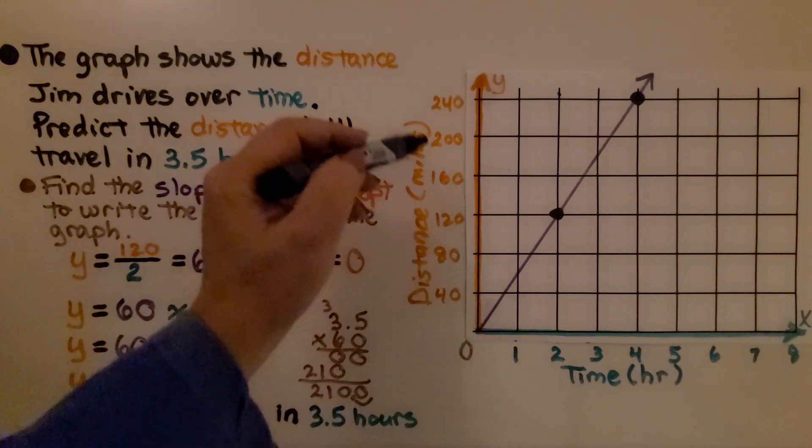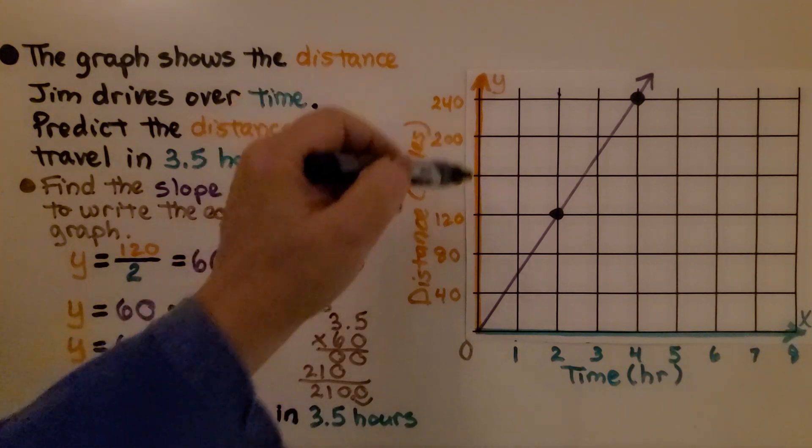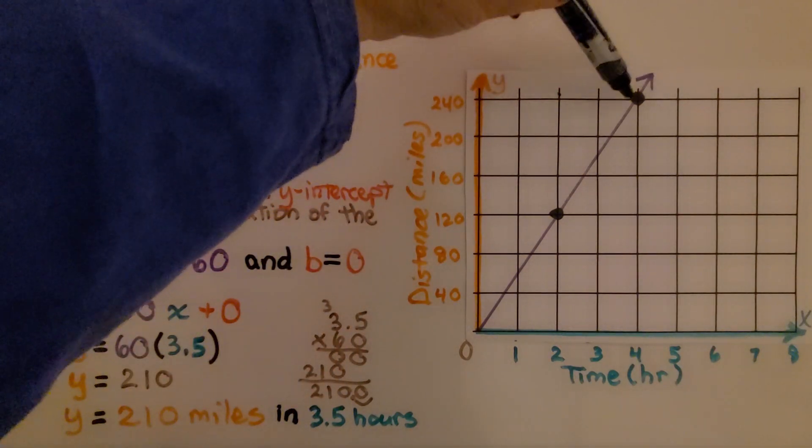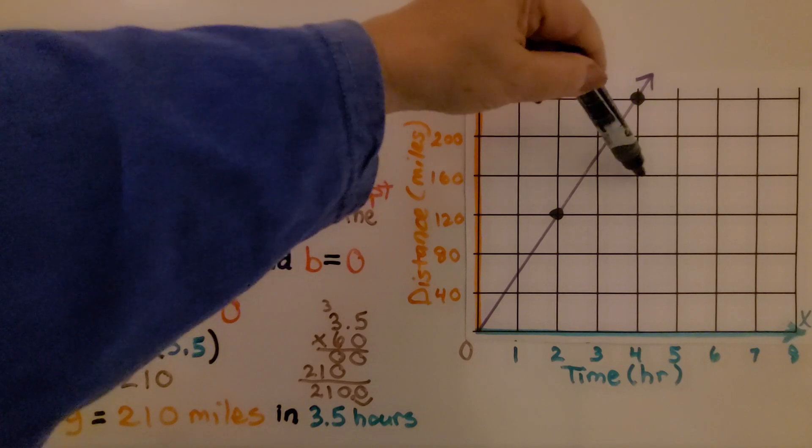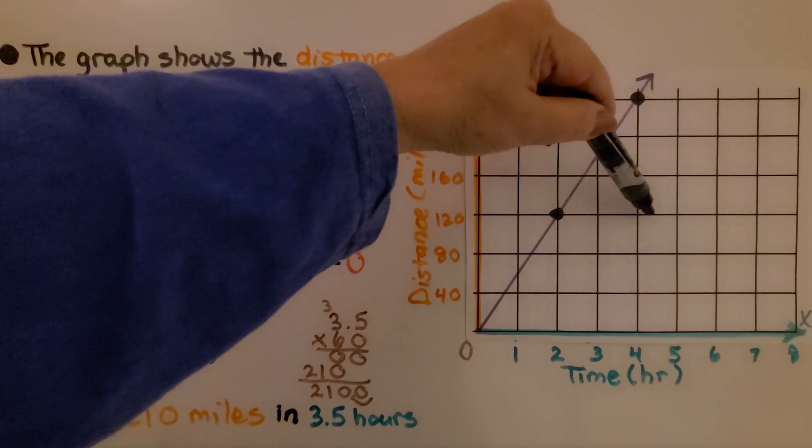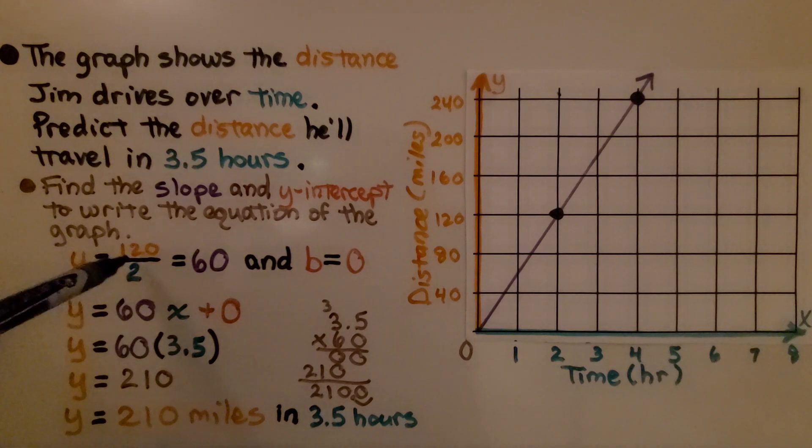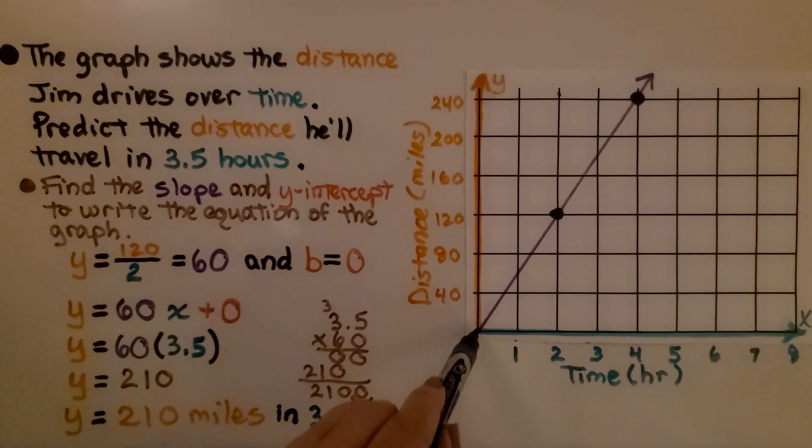We find the slope as 120 over 2. We've got increments of 40. If we use these two points, we're going to have 40, 80, 120 for our rise and 2 for our run. When we simplify that we get 60. We know the slope is 60. We can look at the graph and see that it's intersecting the y-axis at 0. So b is equal to 0.